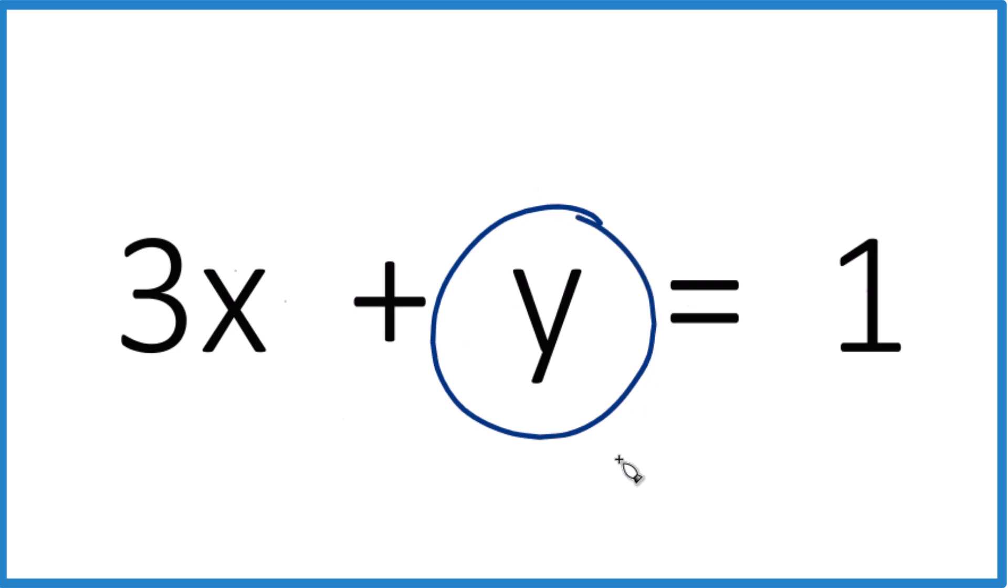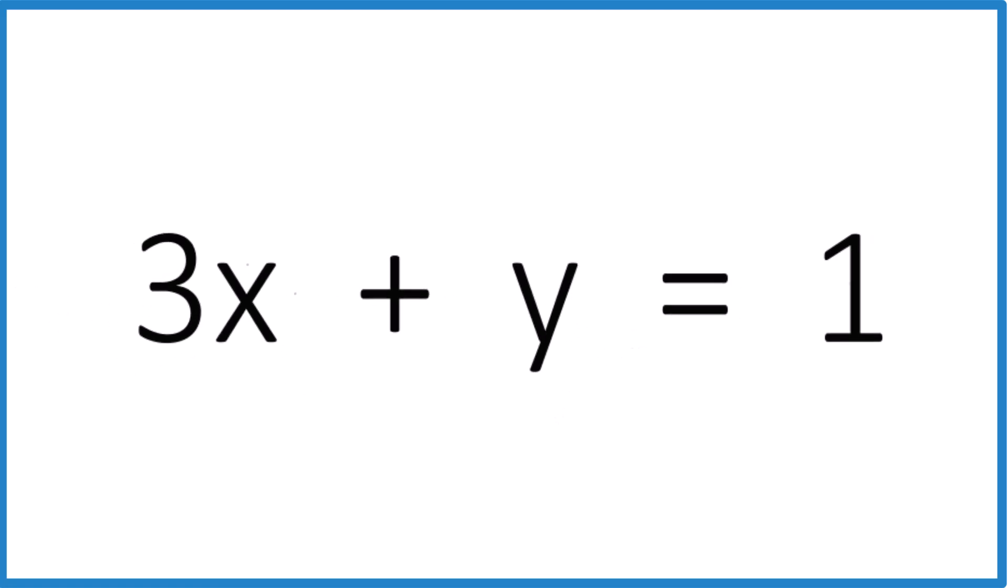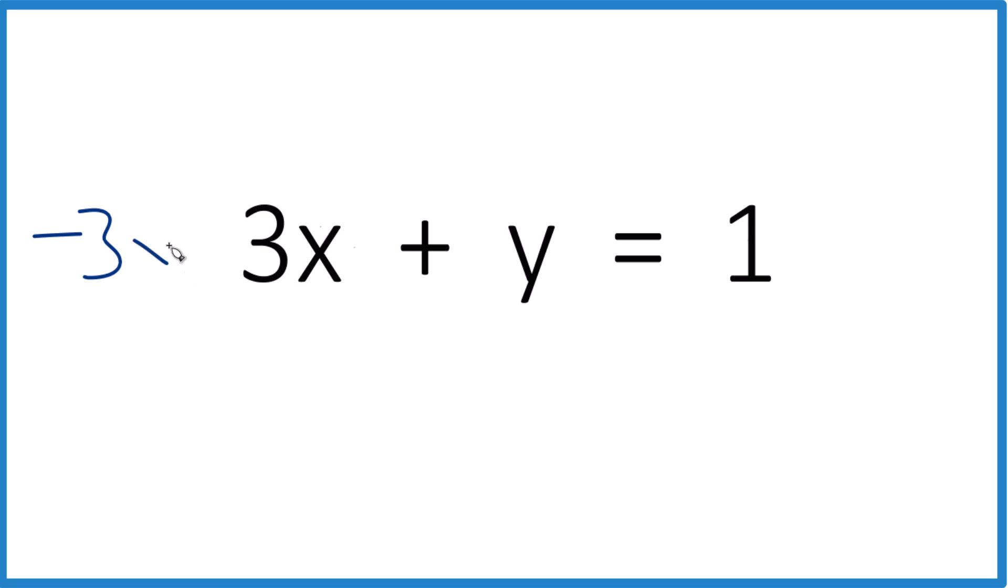So what's the value of y? What we want to do is get y all by itself. We can subtract 3x from both sides, so negative 3x plus 3x, that would give us 0. Then we'd have y all by itself, that would be good.